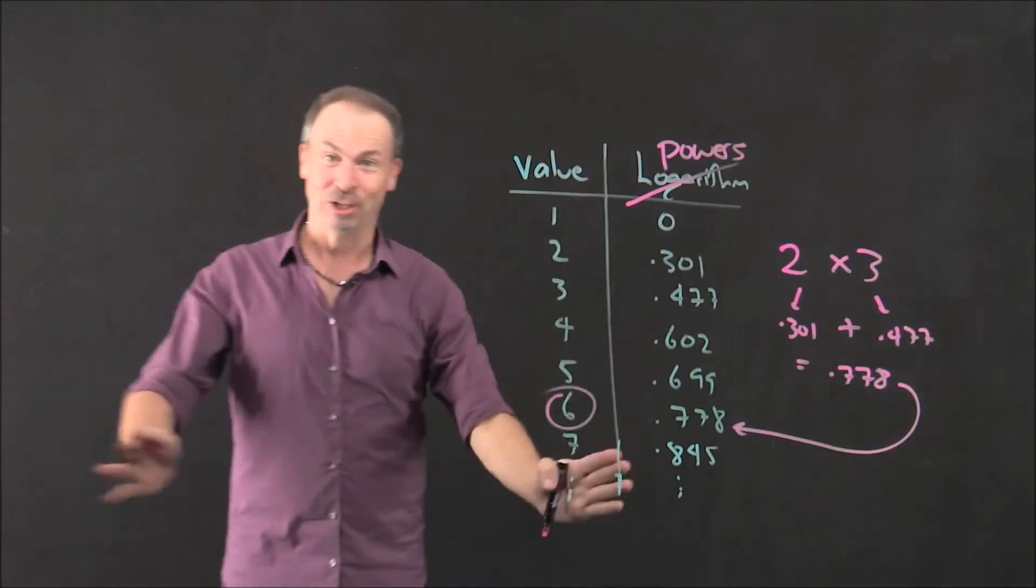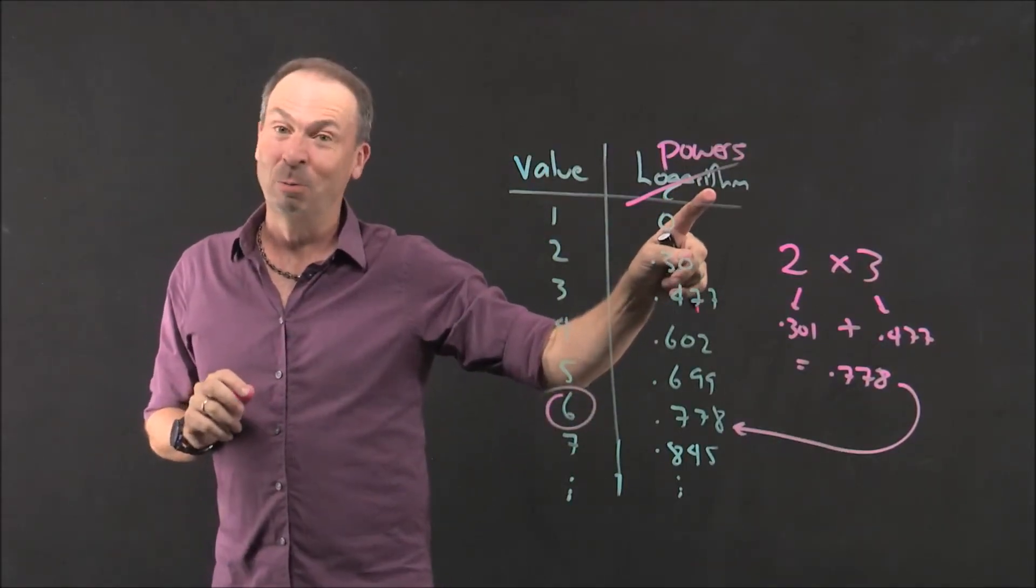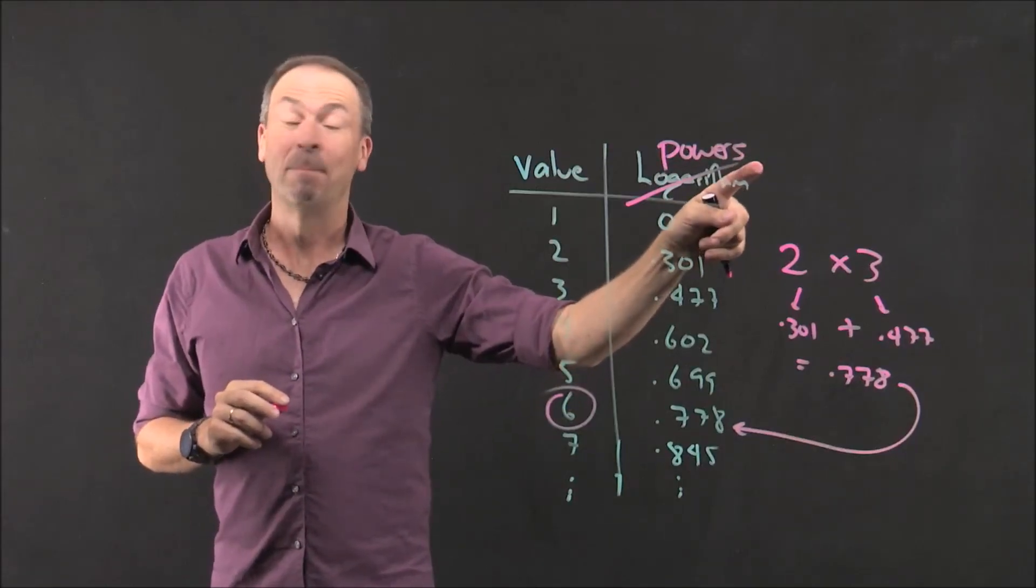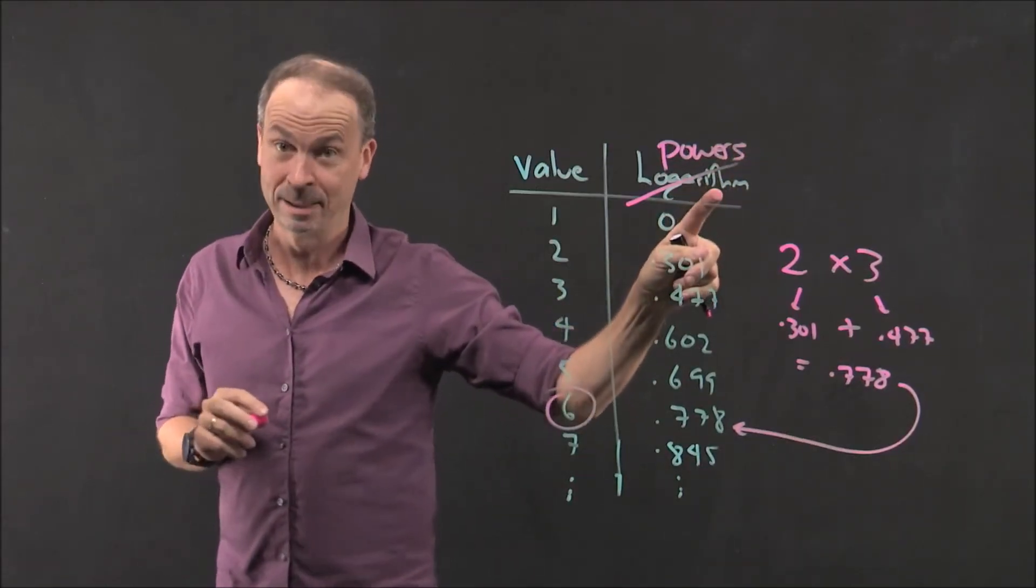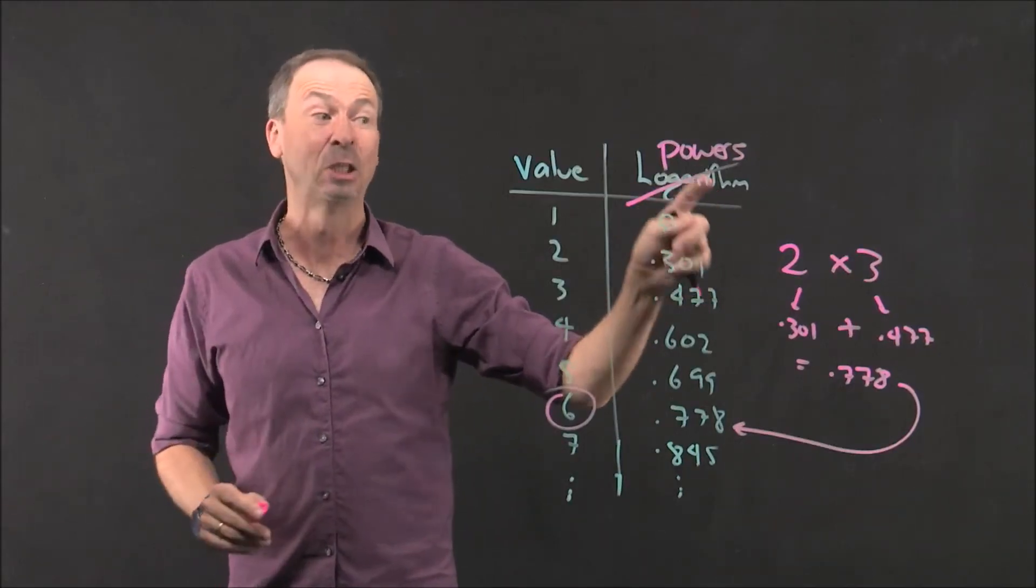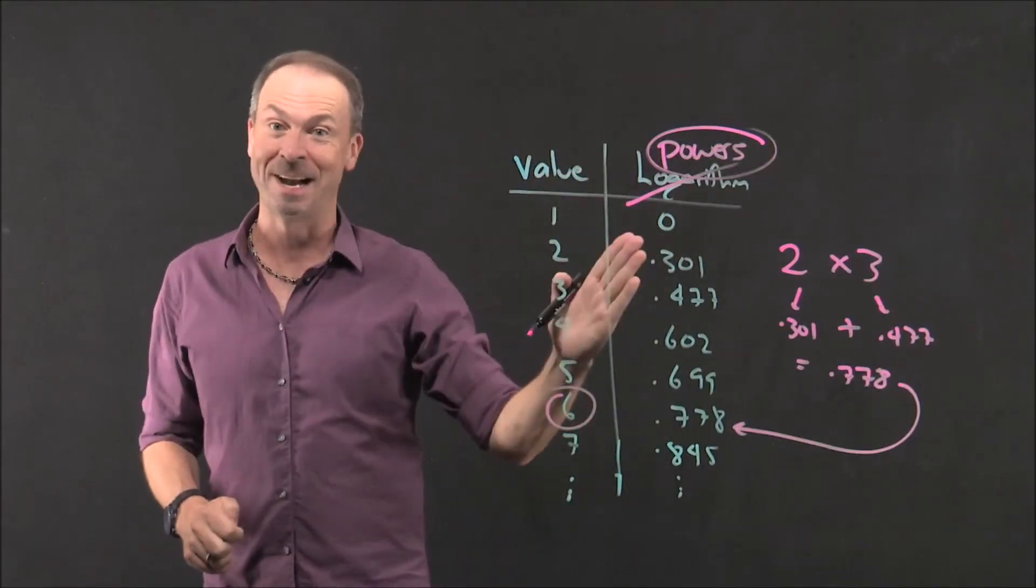So it's unfortunate. I mean, don't get me wrong. I think Napier was brilliant. People did not realize that all logarithms were were just exponents backwards for another 150 years. By that time, the name logarithm had stuck and society wasn't going to stop calling them logarithms. And here we are 400 years later still calling them logarithms.